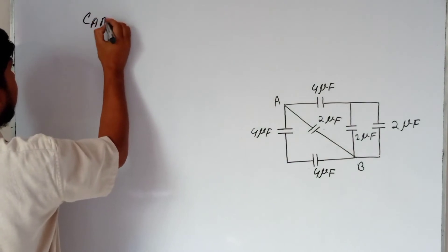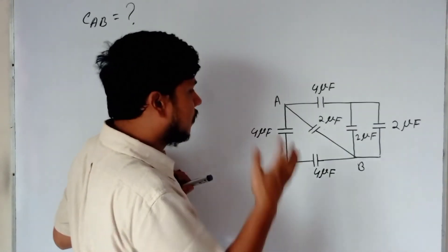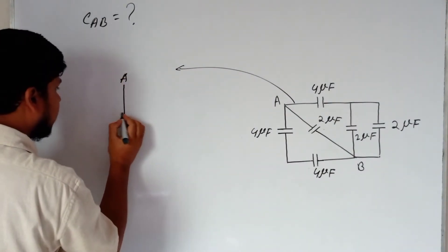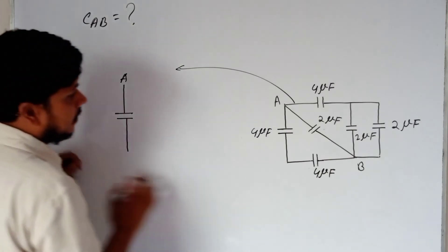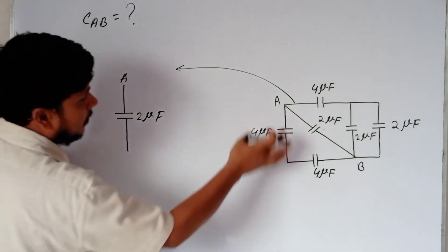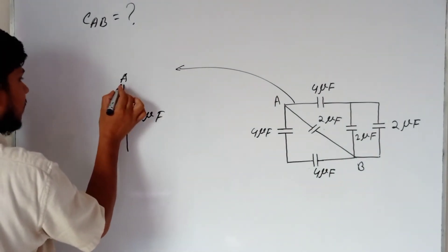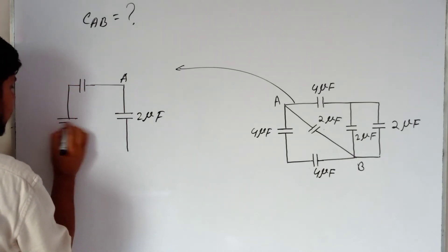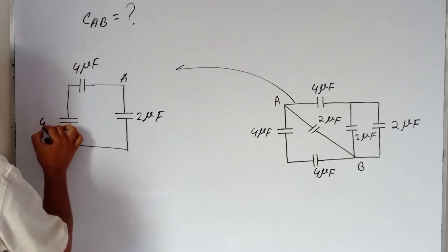Now, what is CAB equal to? Looking at the circuit between points A and B: the capacitor connected from A to B has 2 microfarad. There are two such capacitors in series giving 4, and another branch also gives 4 microfarad. So each branch from A to B gives 4 microfarad.